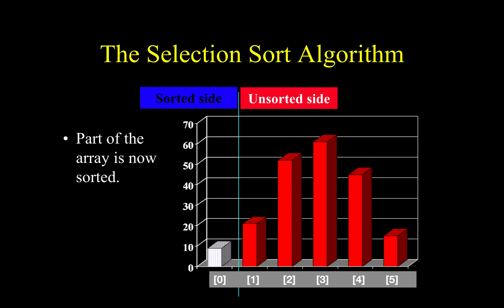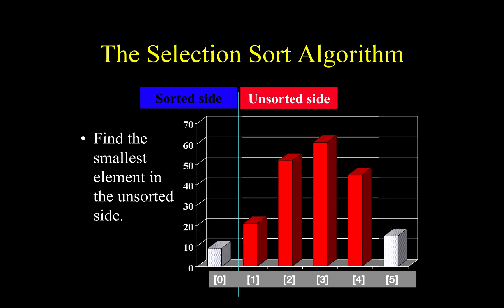You apply the same operation for the unsorted side. You iterate and then you find the smallest, then you swap it with the first element in the unsorted side.